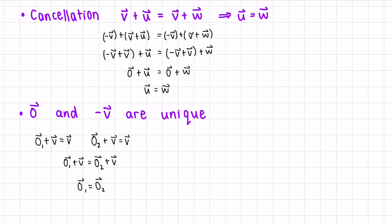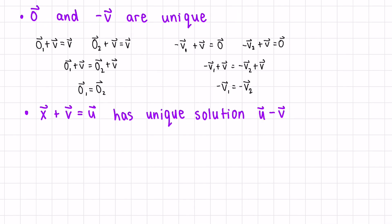Similarly, the negative vector is unique. We have negative v plus v equals the zero vector. Since we're trying to show it's unique, let's say negative v1 and negative v2. We set them equal to one another, and by the cancellation law, we can conclude negative v1 equals negative v2, so the negative vector is also unique.